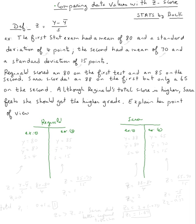So 80 on exam one, so y equals 80, and 85 on the second one. Sarah scored 88 on the first one, but only 65 on the second one.